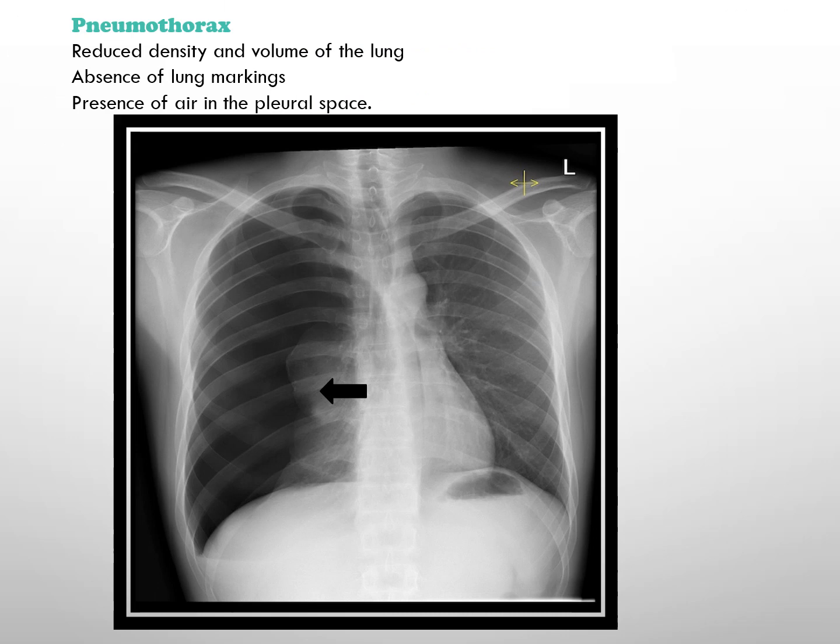This x-ray shows pneumothorax, which is identifiable on chest x-ray by the reduced density and volume of lung on the right side. It is characterized by the absence of lung markings and the presence of air in the pleural space.